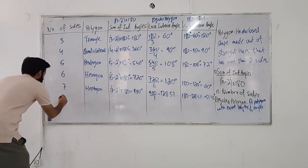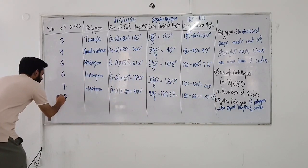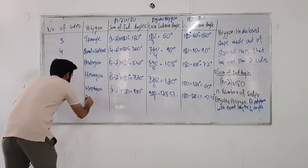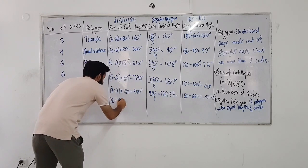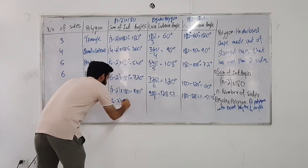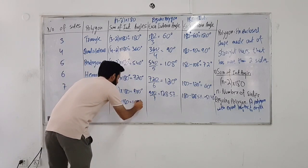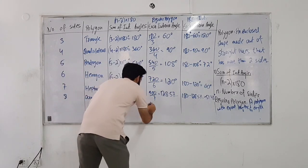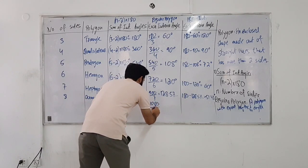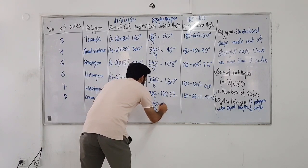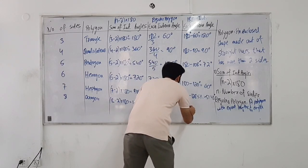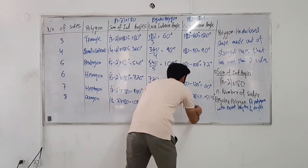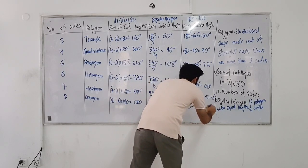What do you call an eight-sided polygon? An octagon. The sum of interior angles of an octagon is 1080. Split 1080 eight ways, you get 135 degrees each. And 180 minus 135 gives you 45 degrees for the exterior angle.